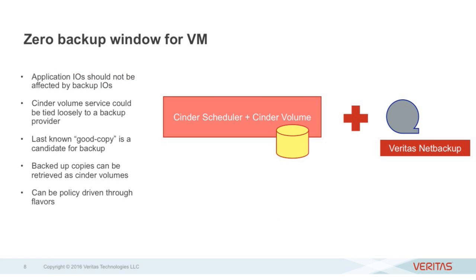Now let's talk about zero backup window. For a backup, you shouldn't have to acquiesce application IOs or have any window where you shut down the application. Even in a DAS environment, this is possible. One solution is to tie the Cinder volume with a backup provider directly and use snapshotting to pick up the last known good snapshot and move it to backup — giving you a zero backup window for your virtual machines. This can be driven through flavors, attaching backup schedules to specific classes of VMs.